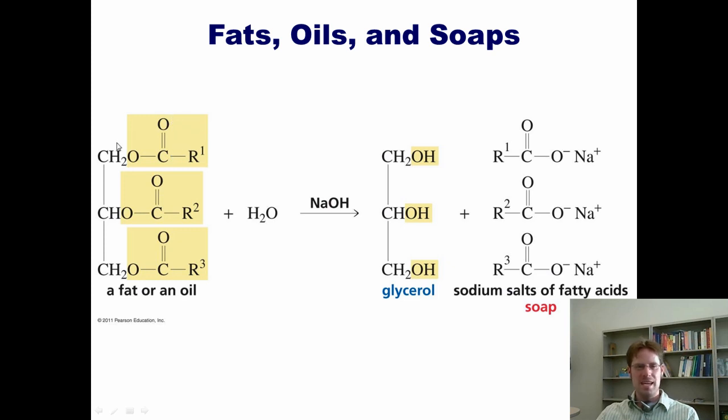This is the structure of fats and oils. The only practical difference between a fat and an oil is that a fat is a solid at room temperature and an oil is a liquid at room temperature. What makes something solid versus liquid at room temperature? It is the identity and structure of these three R groups. Generally speaking, the longer and the larger these R groups, the more likely it is going to be a solid at room temperature.